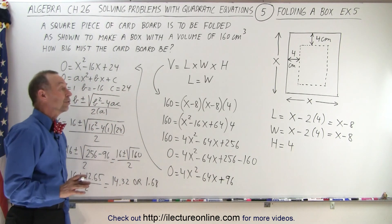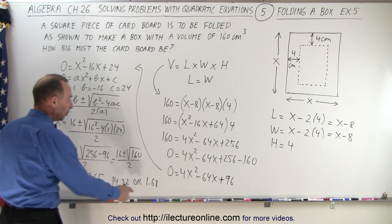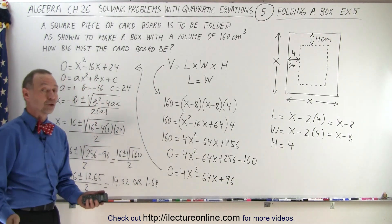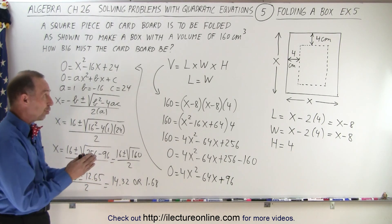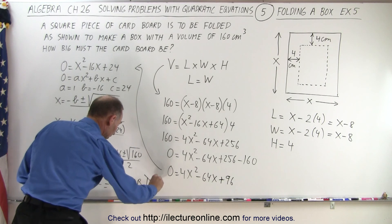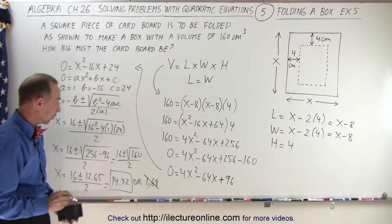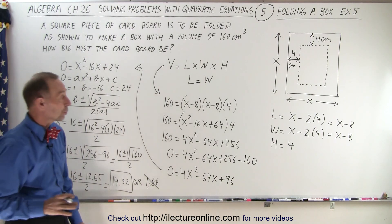1.68. Now notice it doesn't seem likely that 1.68 is a good solution because there's no way you can cut 4 centimeters from a cardboard that's only this big across. So it looks like this is the cardboard we're going to use. So x is 14.32 centimeters.